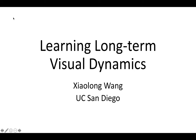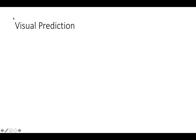Hello everyone, this is Xiao Long. I would like to talk about our work on learning long-term visual dynamics. In this talk, we'll be focusing on the problem of visual prediction and use graph neural networks to help with visual prediction.